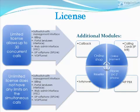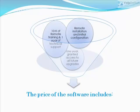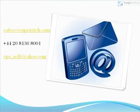The additional modules work only with the VoIP Switch main package, except for VoIP Switch soft phones. VoIP Switch offers a limited license supporting up to 30 concurrent calls and an unlimited license supporting up to 1,000 concurrent calls. The price of the software includes remote installation, 10 hours of remote training, and one year of technical support and access to all feature upgrades. Thanks for watching — I'm Roy from the VoIP Switch sales team.